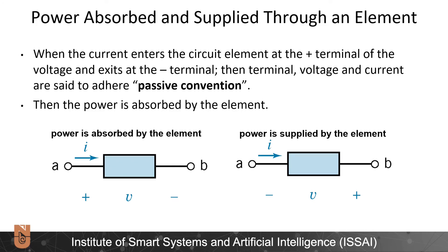When the current enters the circuit element at the positive terminal and exits at the negative terminal, the voltage and current adhere to passive convention, and power is absorbed by the element. If the current enters at the negative terminal and exits at the positive terminal, then power is supplied by the element. For instance, a resistor absorbs power and generates heat, while a battery or power supply supplies power to the remaining elements of the circuit.